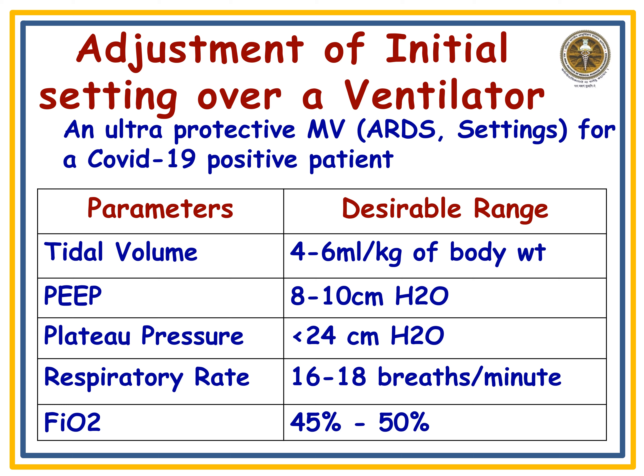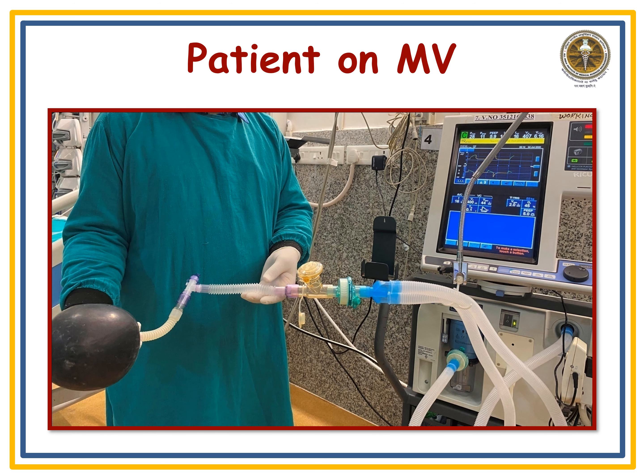For the ARDS setting, the respiratory rate is set at a range of 16 to 18 breaths per minute. FiO2 supports the patient's saturation and is kept in a range between 25 to 50 percent on the ventilator. After one hour, perform an ABG; if values are still abnormal, change the existing parameters on the ventilator.